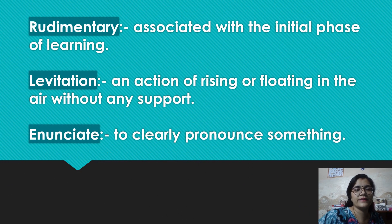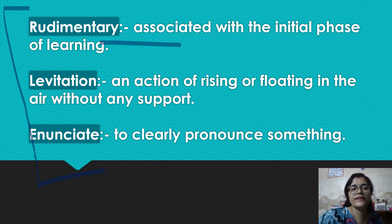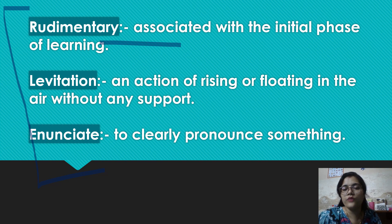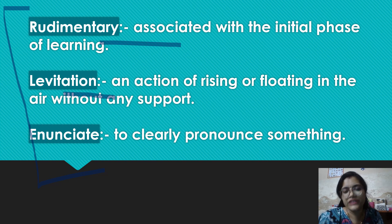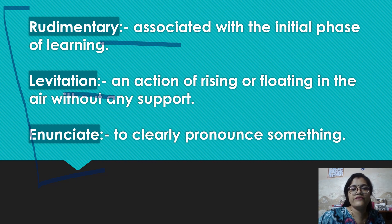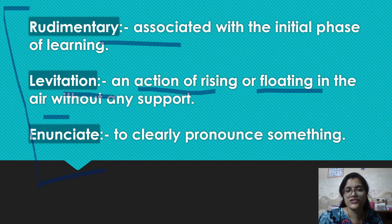Okay, next up we are going to tell you words from another movie. So rudimentary, which is from the Harry Potter movie. Rudimentary is something which is associated with the initial phase of learning — so when you are in the initial phase of learning something, you are being called rudimentary. Okay, next is levitation. Levitation is an action of rising or floating in the air without any support. If you have seen Harry Potter, you will know it — going up in the air without any support — so there is a term for that which is called levitation.